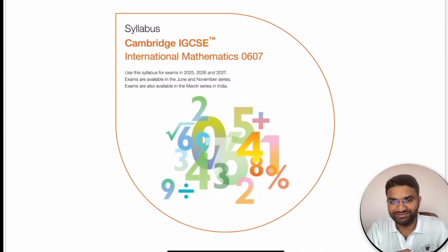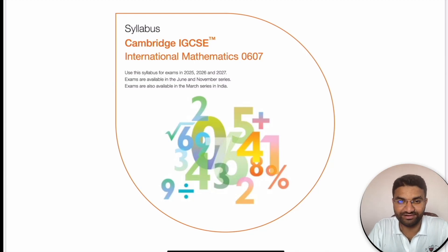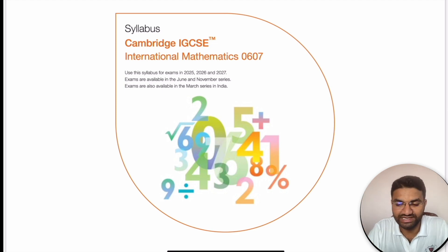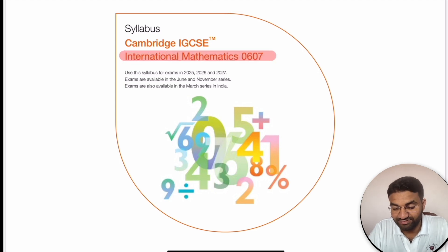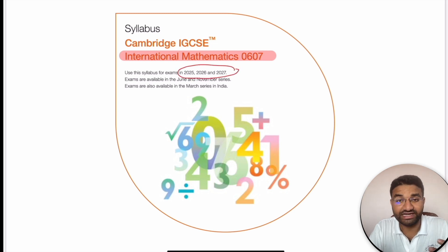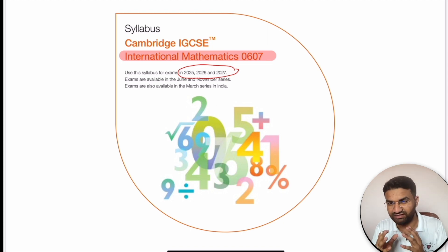Hi, hello everyone, welcome to Vision Classes — classes for IGCSE and GCSE students around the globe. Today we have to discuss the syllabus and structure of Cambridge IGCSE International Mathematics, paper code 0607. This syllabus is for 2025, 2026, and 2027; it is more or less the same but some slight differences are there, which we will talk about in this video.